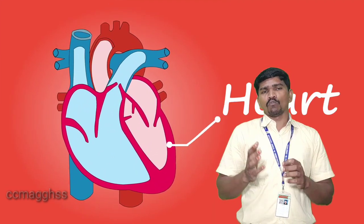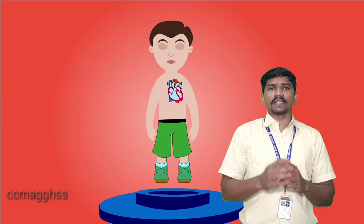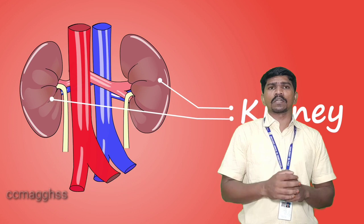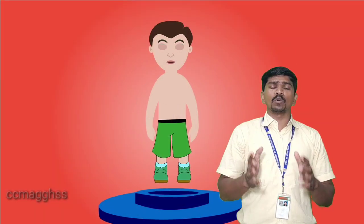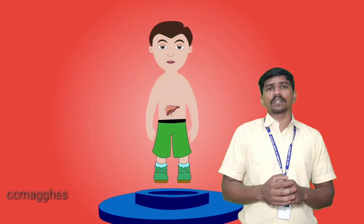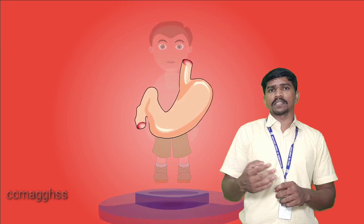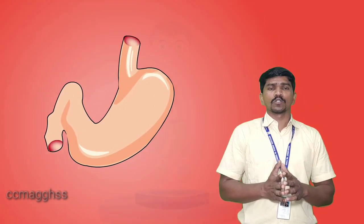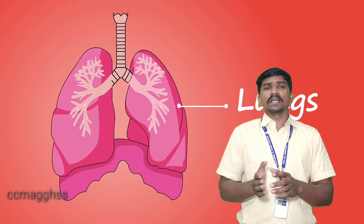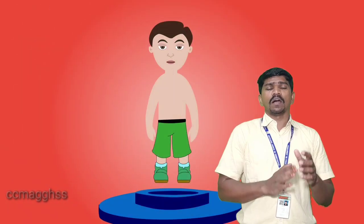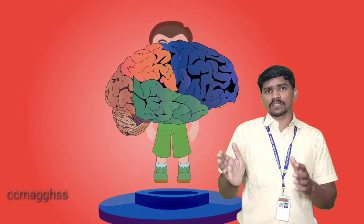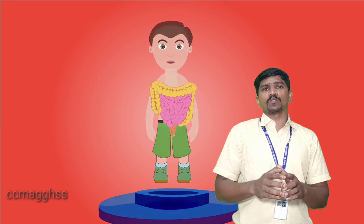Let's recap. Atoms are comprised of molecules. Molecules are comprised of cell organelles. Organelles form the cells. Cells form tissues. Tissues form organs. Then multiple organs form an organ system. Multiple organ systems form the complete organism. This is the basic structure of the human organ system, and it is applicable to all organisms.